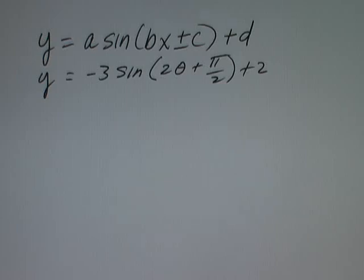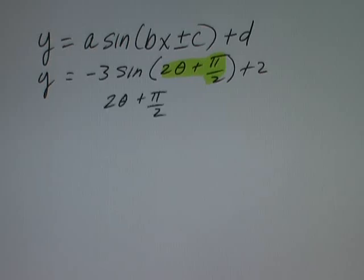So where we're going to start is within the parentheses, looking at 2θ + π/2. We want to figure out what's going on horizontally. Notice that I'm multiplying theta by 2, so I'm compressing the sine function by a factor of one-half.